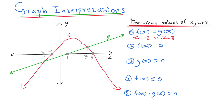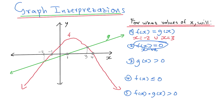Now we're going to look at where f of x is equal to 0. Where is our f of x equal to 0? It is where our y value is equal to 0. Where are our y values equal to 0? It's where we have the x-intercept. Remember, every time when you're solving for x-intercept, you're going to say: for x-intercept, let y be 0. Well, here y is already 0, which means you're just going to find your x-intercept.